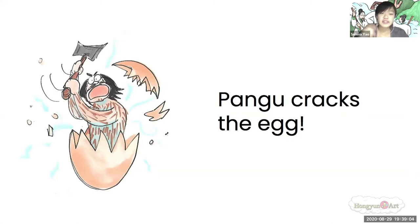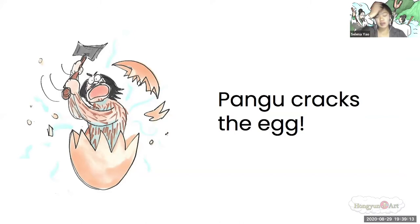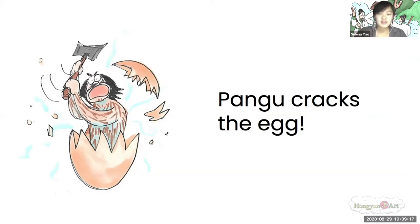So what he did was he made his two eyes the sun and the moon, his hair became the trees, his muscles became the fertile land, and his breast became the wind. And that's how the Chinese believed that this world was created.